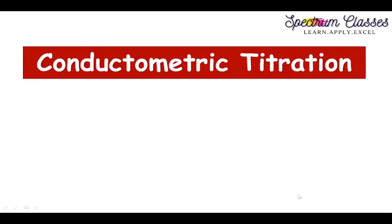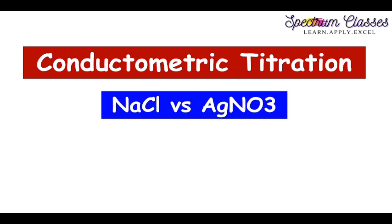Hello everyone, welcome back to Spectrum Classes. In this video we are going to perform a conductometric titration of NaCl versus AgNO3. This is a precipitation titration and we are going to perform it through conductometric titration, and in this manner we are going to measure the normality of silver nitrate, or vice versa.